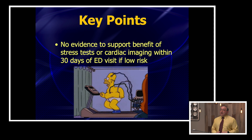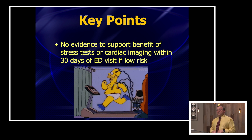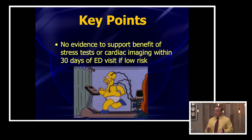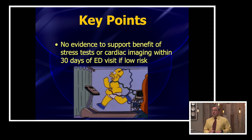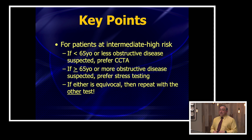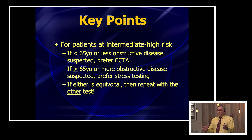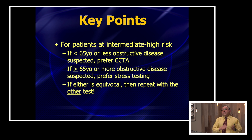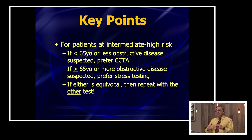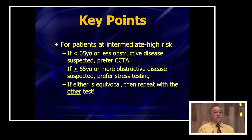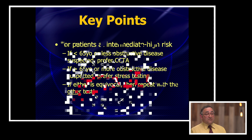There's no good evidence to support the benefit of stress testing or cardiac imaging within 30 days of an ED visit if they end up having low risk based on the HEART score or EDACS or other accelerated diagnostic protocols. For intermediate risk patients who do need a workup: if they're under 65 or less likely to have obstructive disease, you probably ought to get a coronary CTA. If they're over 65 and more likely to have obstructive disease, go ahead with stress testing. If the result is equivocal, then go to the other test as an alternative.